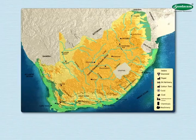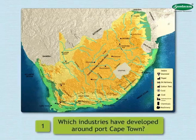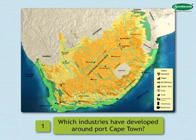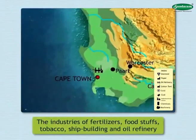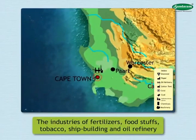Answer the following questions with the help of the map. 1. Which industries have developed around Cape Town port? The industries of fertilizers, foodstuffs, tobacco, shipbuilding, and oil refining have developed around Cape Town.